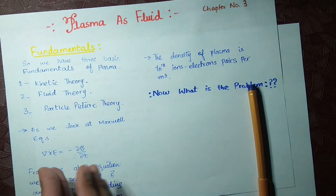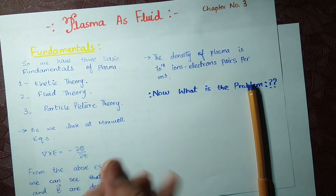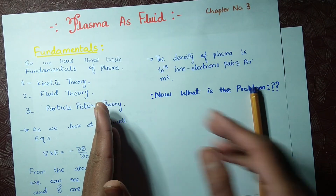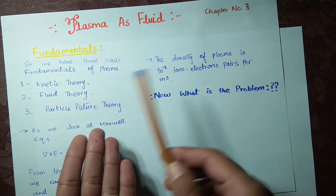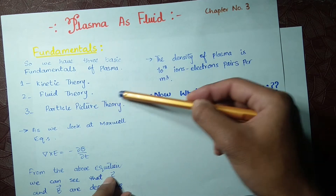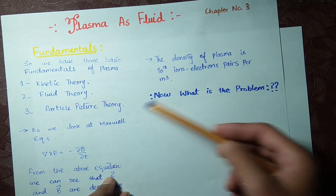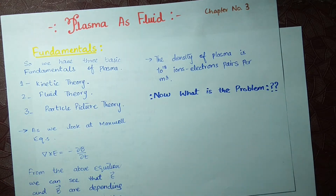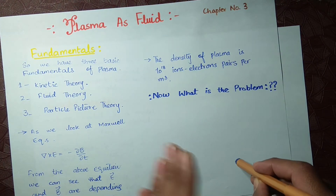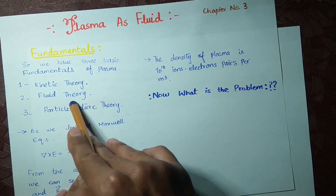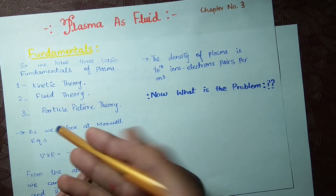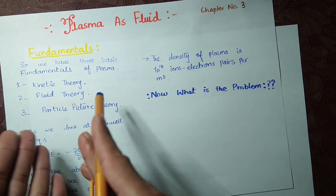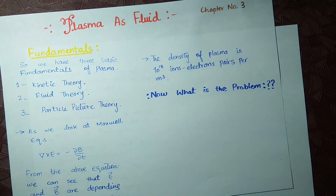When we talk about kinetic theory, we studied it in the previous chapter on single particle motion, where we applied electric and magnetic fields — non-varying electric and magnetic fields — and discussed the particle's velocity, acceleration, and other terms. That theory was related to the kinetic theory of plasma. Now we are going to study fluid theory and also discuss the particle picture theory at the end.